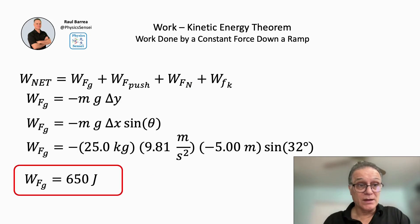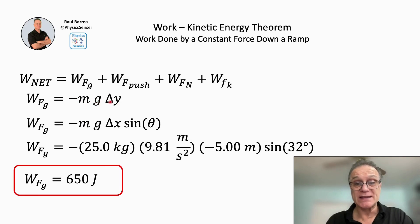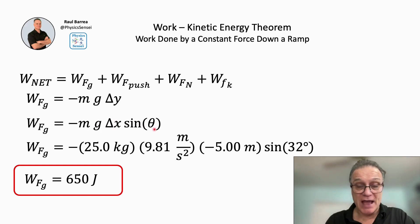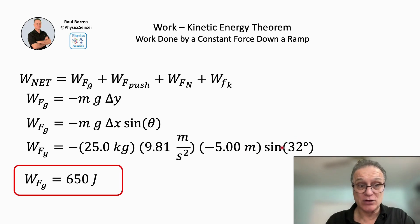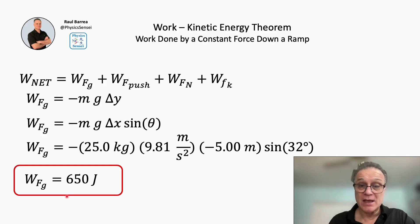For the work done by the gravitational force, we use the expression W = −mg·Δy, where Δy equals Δx·sin(θ). Replacing the values: −25 kg × 9.81 m/s² × (−5 m) × sin(32°). The displacement Δx is negative because the object is going down the ramp. This gives us a work done by gravity equal to 650 joules — positive, because anytime the object moves downward, the work done by gravity is positive.